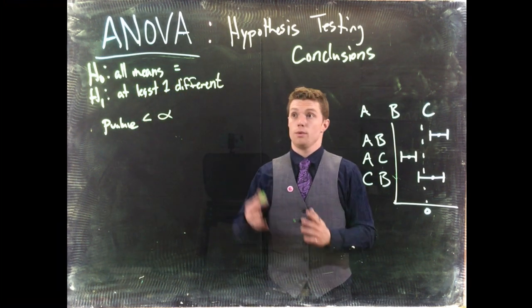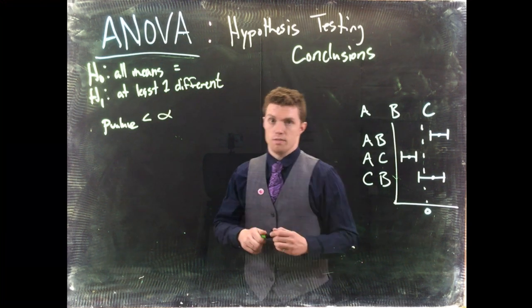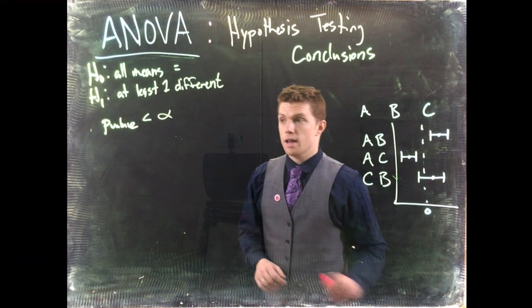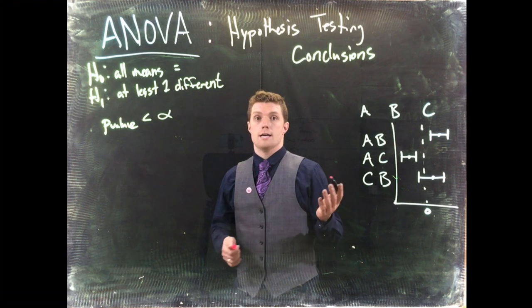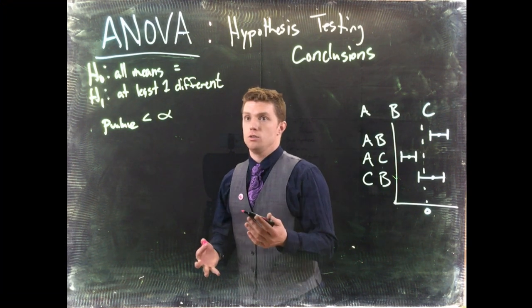Alright, so let's suppose we get that. We run our ANOVA test, we get a p-value less than alpha. Let's write up what our conclusion would be.